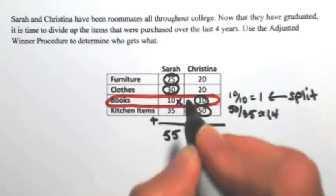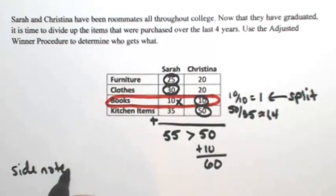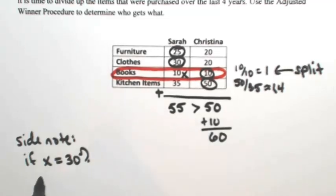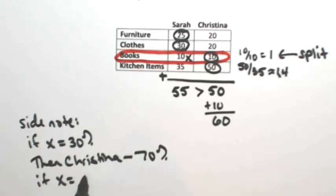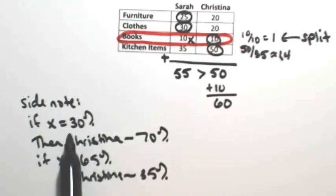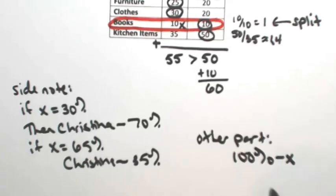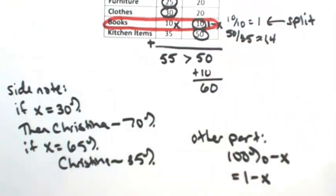So I'm going to give Sarah x amount. And let's figure out what Christina would get. So here's a little side note. If x was 30%, then Christina would get 70%. If x was 65%, then Christina would get the other 35%. So if you notice, to figure out the other part, we take the original percentage and take it away from 100%. So the other part is 100% minus x. Writing that as a decimal, this will be 1 minus x. So on Christina's side, I'm going to assign her 1 minus x of those books.